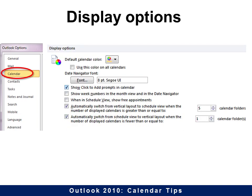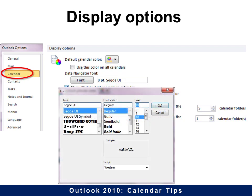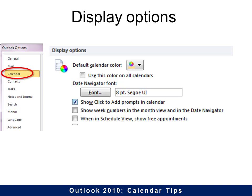Under display options, you can choose the colors that you like for your calendar and the font. Maybe you want to change your font or the size of your font — it's a good place to change the default. You can also choose to have the click-to-add event; if you don't like that, it's the default, but you can turn it off.